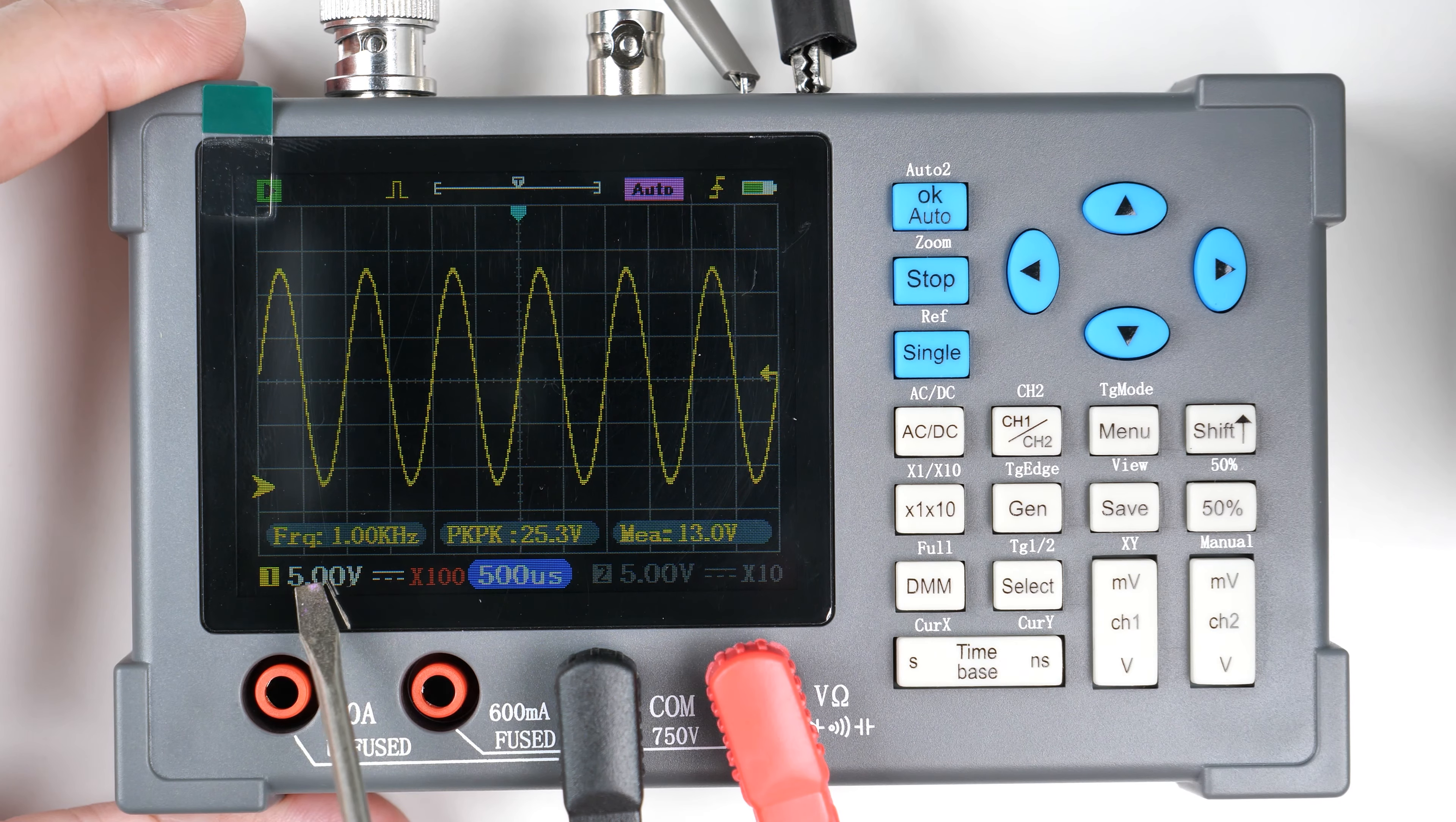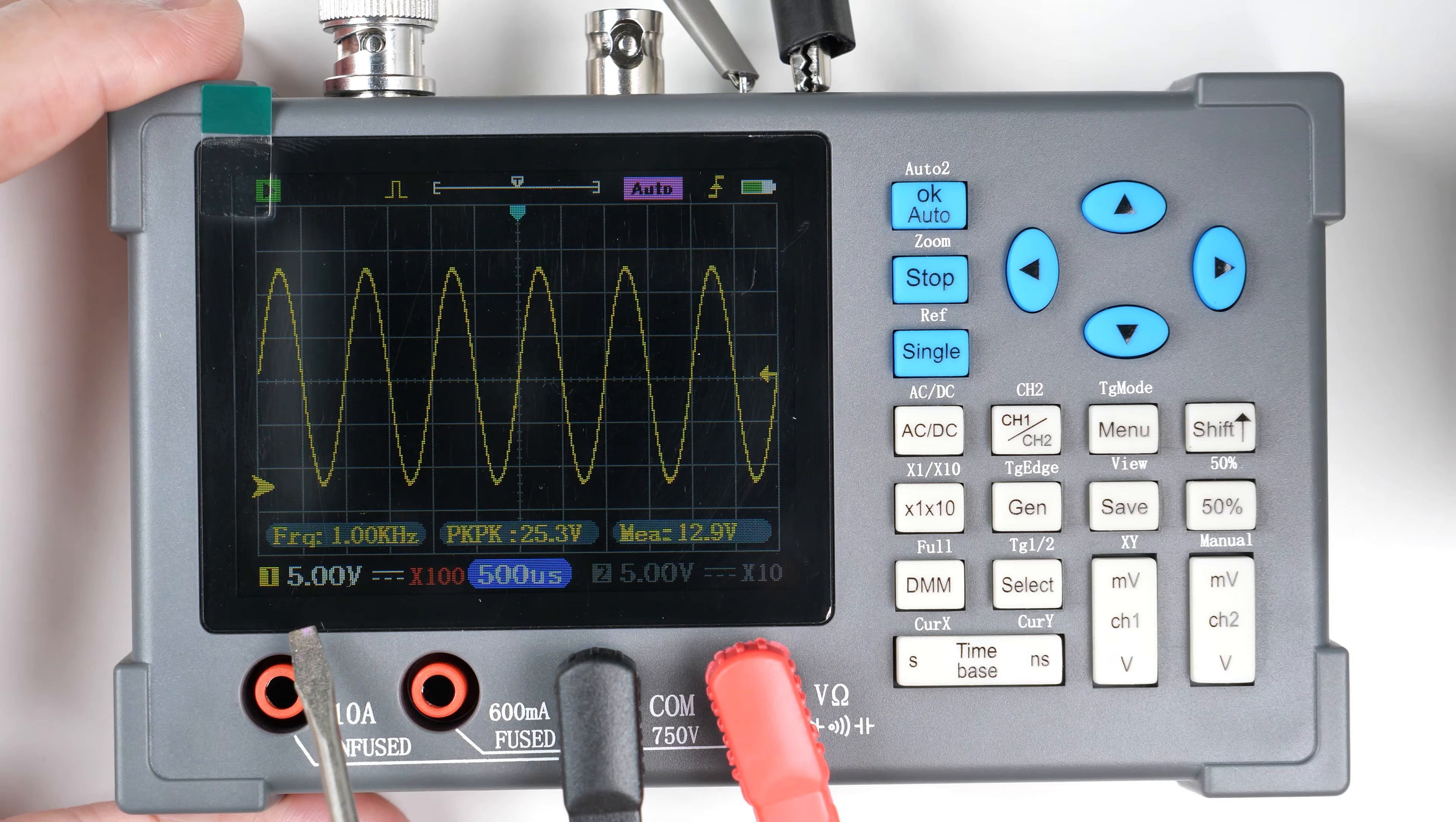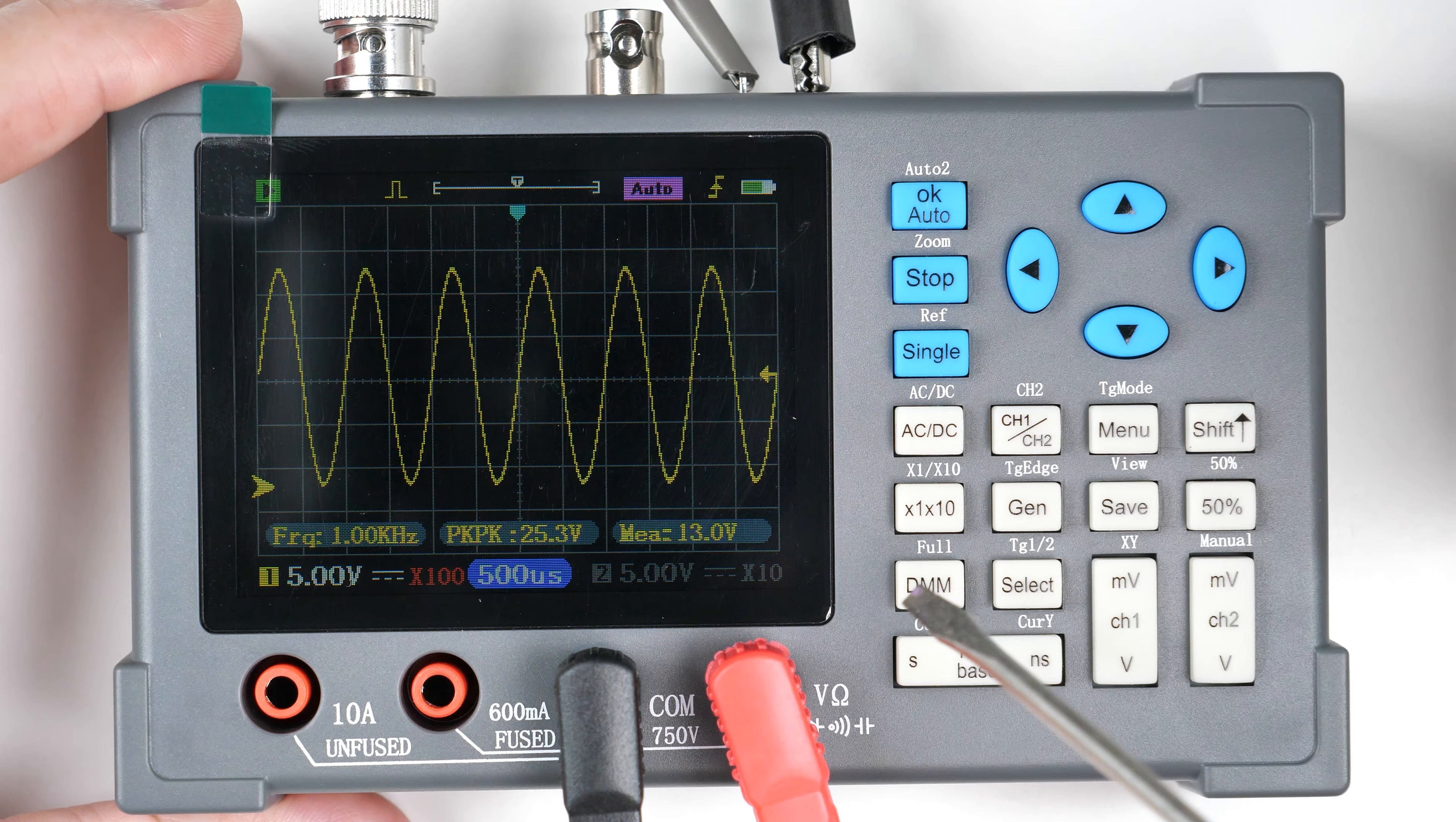Down here it says frequency 1 kilohertz, so that's the output from the generator. Peak to peak is 25.3 volts, and the mean is 13 volts. The output on the generator is 5, it's set to times 100, 500 microseconds. Yes, I can hardly see that.